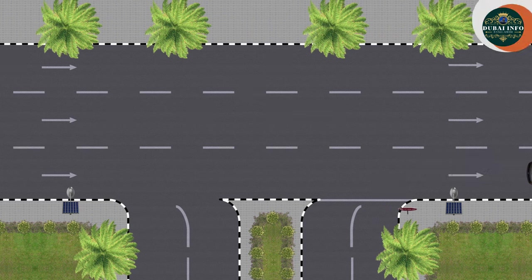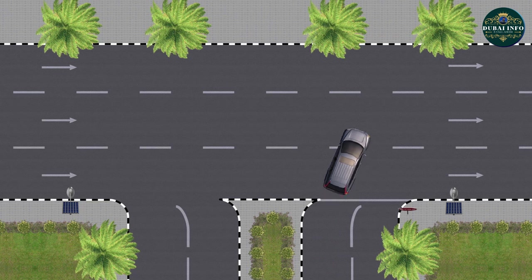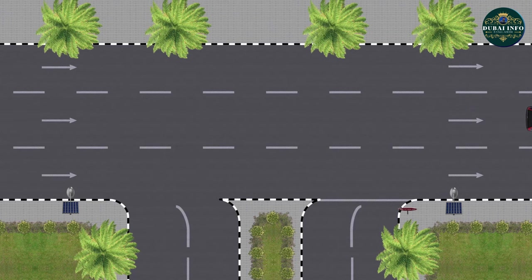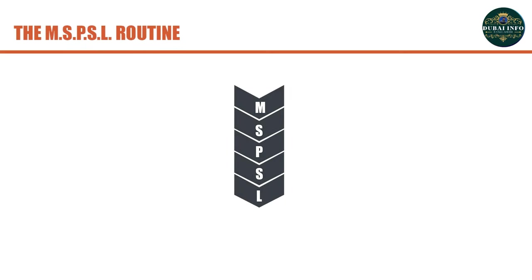Motorists can also use the left lane on the terminating road to turn right onto the continuing road. In this case, motorists can turn into the second lane from the right side or the extreme left lane, depending on where they intend to go from the junction ahead. If planning to go straight, follow the MSPSL routine in the left lane from the terminating road.